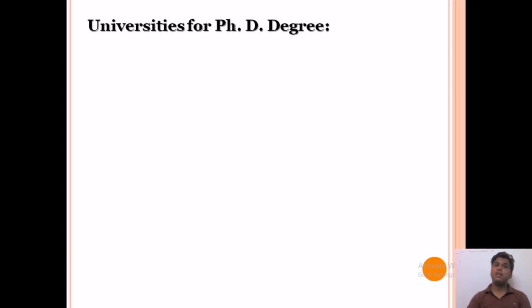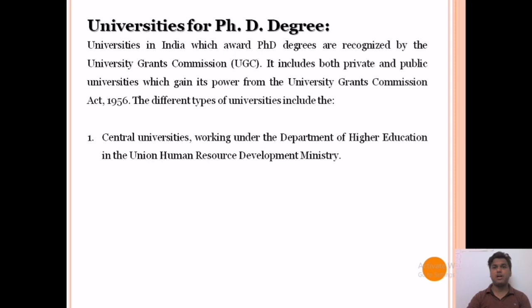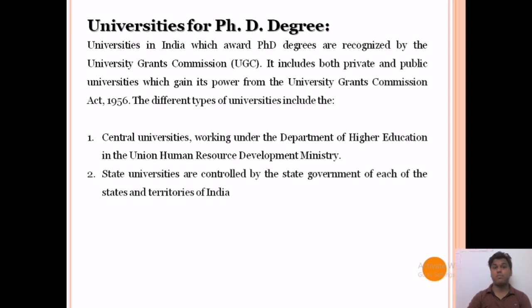After qualifying CSIR UGC NET, GATE, and JEST, it is the candidate's choice where they pursue their PhD. Candidates can approach universities, CSIR laboratories, or IITs. Now we discuss the various institutes in India offering PhD programs. Universities in India that award PhD degrees are recognized by the University Grants Commission, UGC, and include both private and public universities empowered under the University Grants Commission Act 1956.